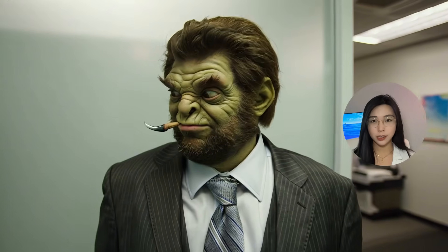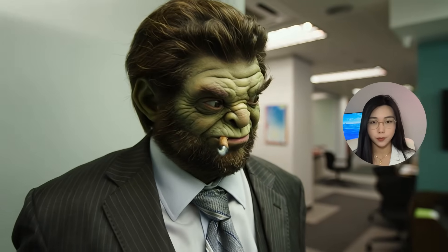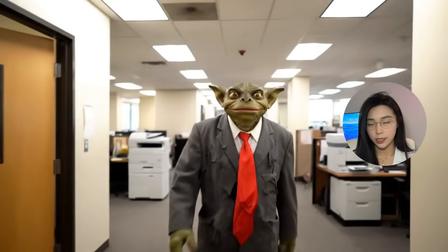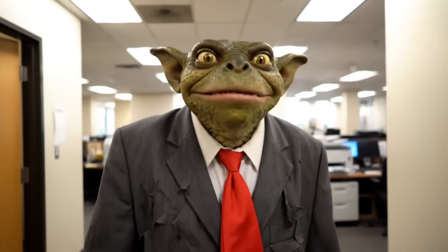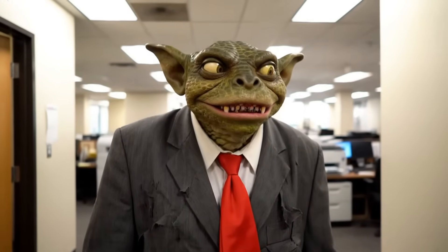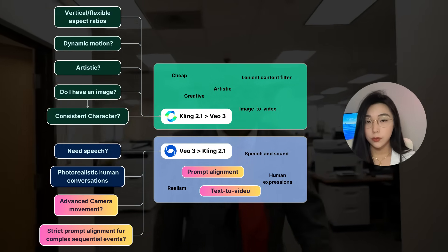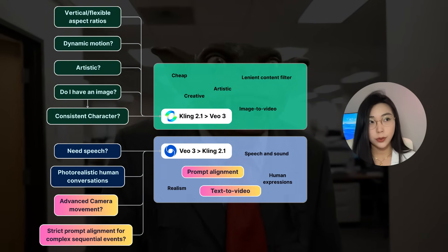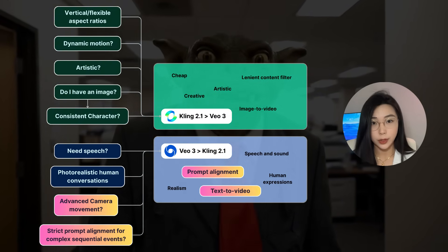With this prompt, Cling struggles to get a good-looking gremlin and fails to do the camera movement of a whip pan. VO3 followed everything really nicely. So if you want advanced camera movements, really tight prompt alignment, or you don't have a starting image, VO3 is the way to go.